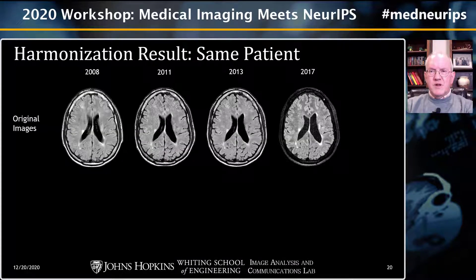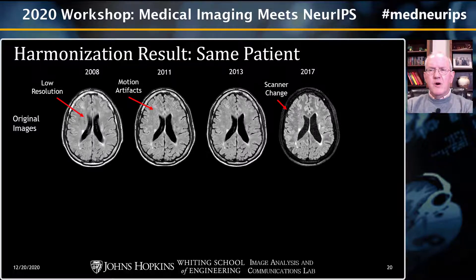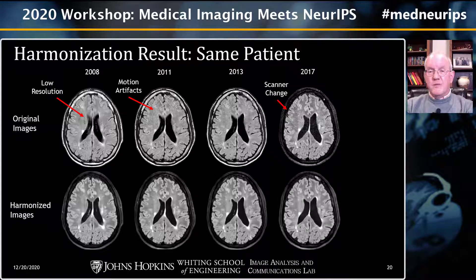As an example, one subject imaged from 2008 to 2017 shows FLAIR images over time. In 2008 the image was quite low resolution; in 2011 the subject moved during acquisition causing motion artifacts; and in 2017 the new scanner produces different tissue contrast and noise. The harmonized results shown below have very strong similarity — at first glance they look like the same image. But this individual has multiple sclerosis, and on closer inspection you can see brain changes over time: some atrophy and white matter lesions that have come and gone or come and stayed.